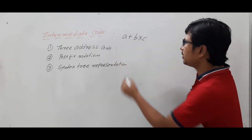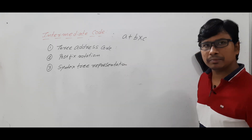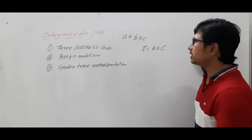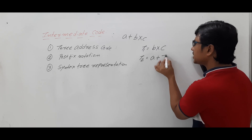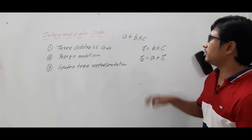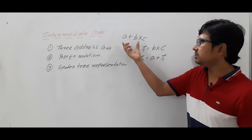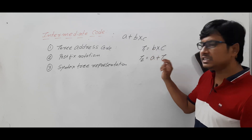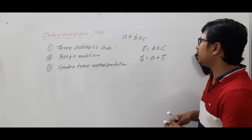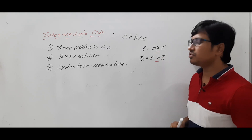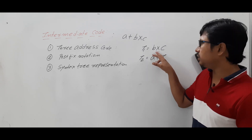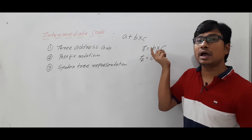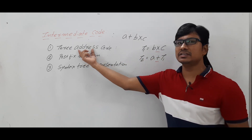Coming to the three address code — to represent this expression, first I need to perform the multiplication. So I will take a temporary variable: t1 = b * c. Then t2 = a + t1. This is the three address code representation for this expression. If you look at each statement, on the right-hand side you have only one operator. So note this first point. On the right-hand side you have only one operator, and you have two source operands and one destination operand — so at most three operands. That is why it is called three address code.